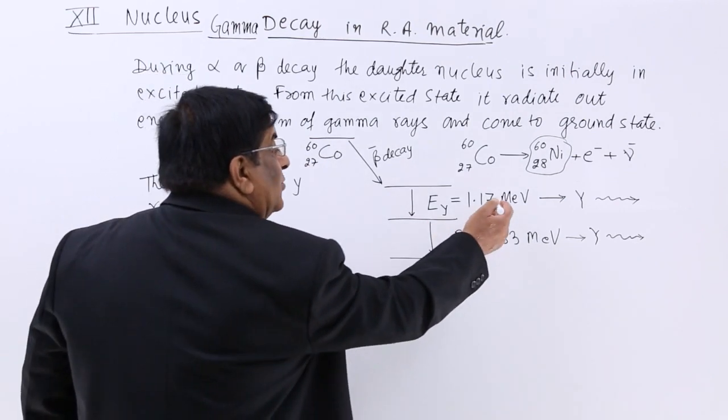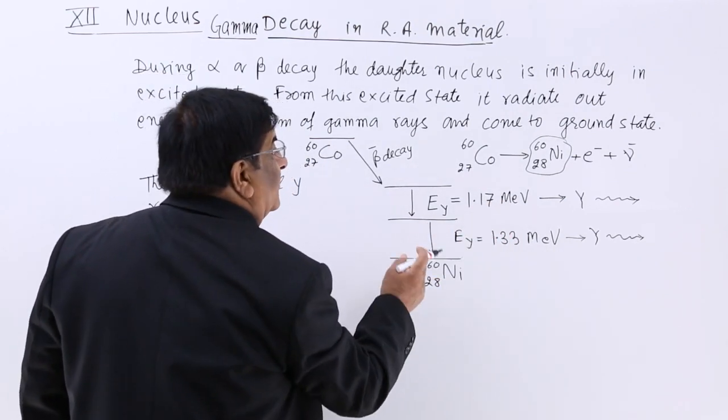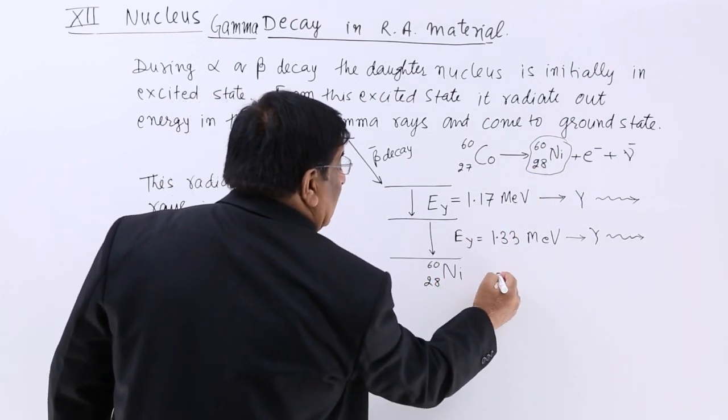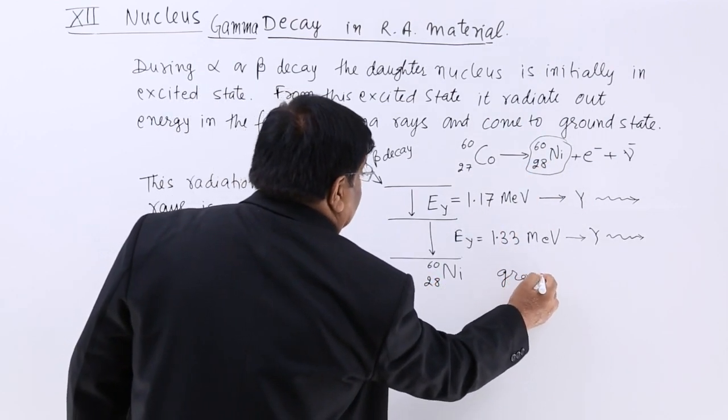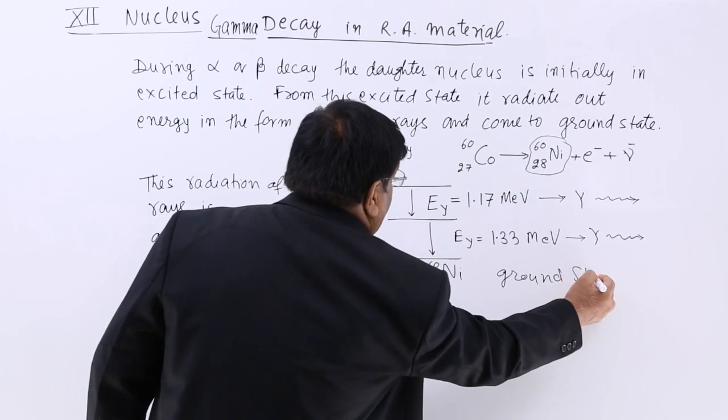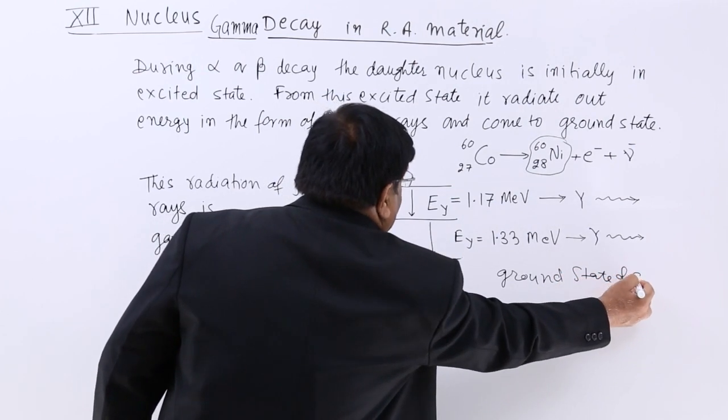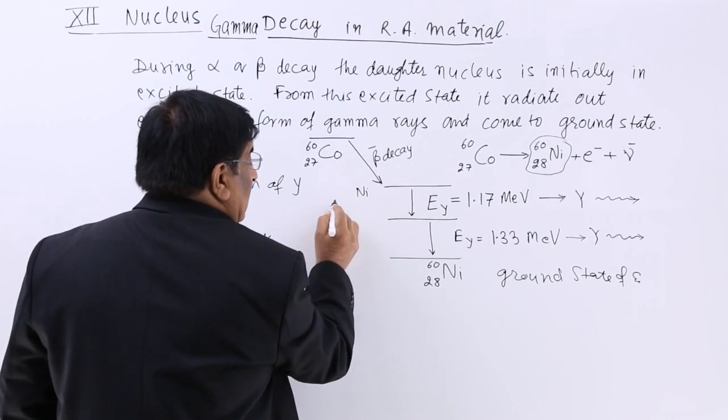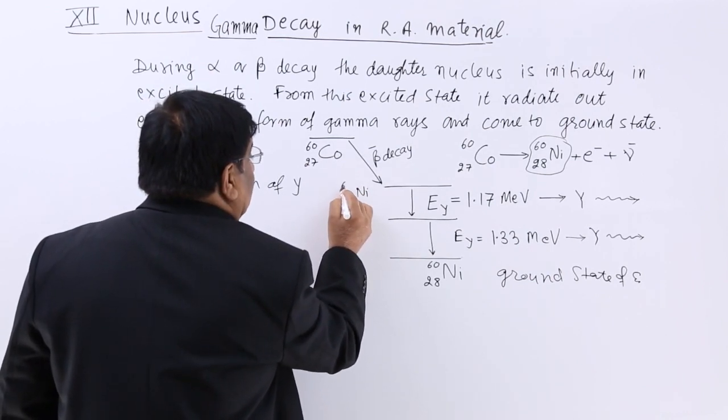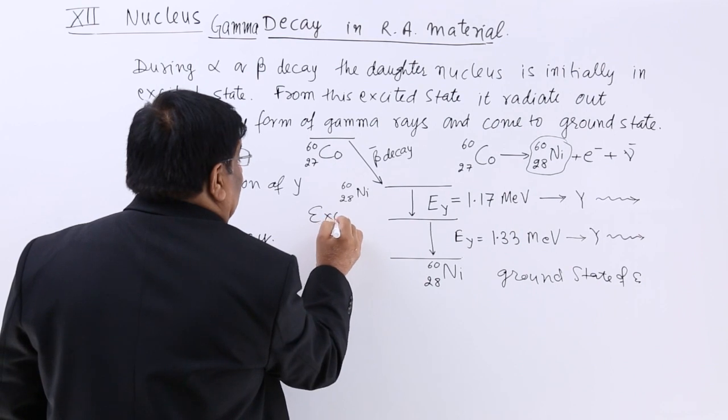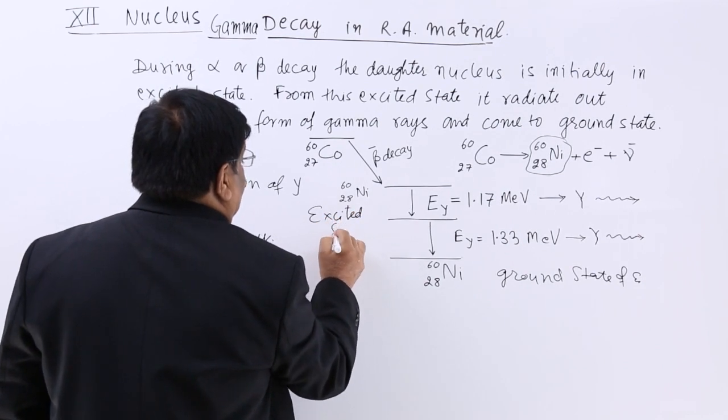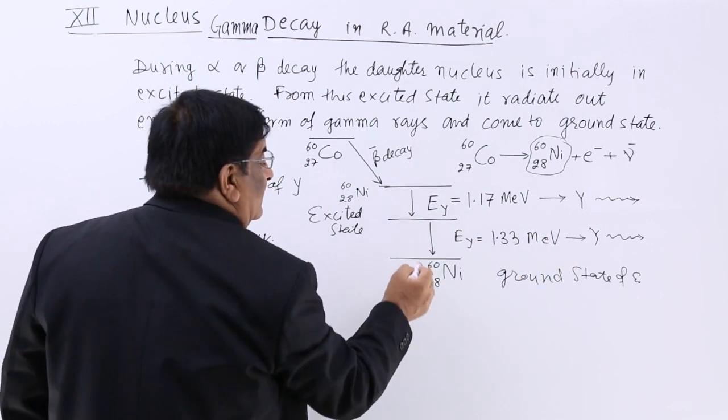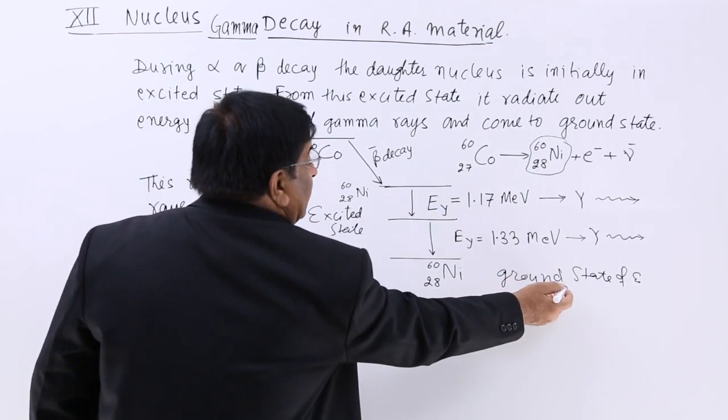After losing so much what we observe is that we have found nickel and this nickel is in ground state of energy. Here we have got nickel 28 but this is in excited state. From excited state it gives out two photons and comes back to ground state.